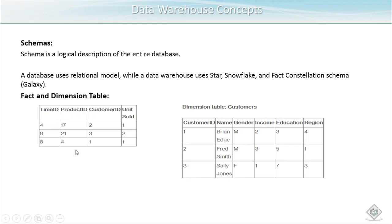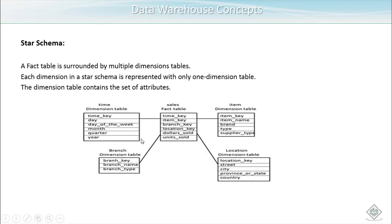Here is a sample fact and dimension table. The dimension table for the customer holds master data containing information like customer ID, name, gender, income, education, and region. The fact table holds the primary key of the customer table along with values like units sold.